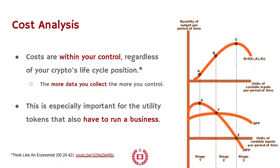For utility tokens in particular, who have to run a business in addition to being a cryptocurrency built on blockchain, you're going to have costs: marketing spend, development costs, technology, cost of operation, customer feedback. All of it is going to cost you money. Cost analysis is key within economics — fixed costs, variable costs, marginal costs, average costs, everything about it needs to be looked at. This is one of the things directly within your control. You don't control the demand side; you can't control holders of your token. But you do control your costs, and the more data you collect around them, the more you will be able to refine that control.